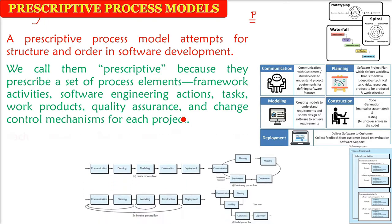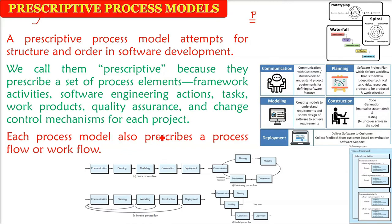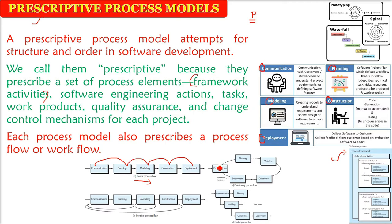Each process model will also tell you, whichever model you choose, how the flow of process will be. Process is the bigger chunk of work. For example, the linear process model has five major framework activities: communication, planning, modeling, construction, and deployment. Framework activities have actions and task sets. The flow of these activities — every model will also tell you what the workflow will be. It can be linear, iterative, evolutionary, or even parallel process flow.